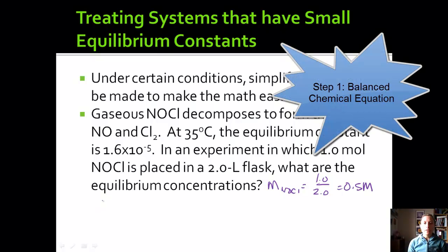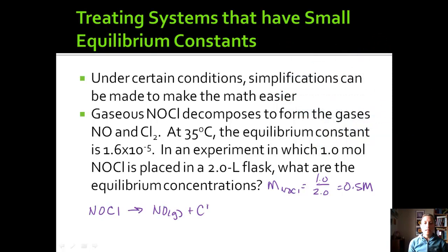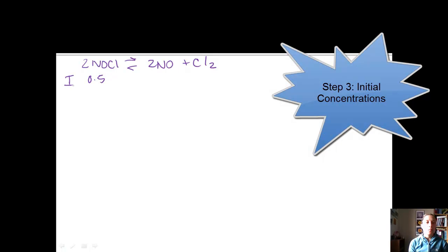We know it's moles per liter. One mole over a 2-liter flask gives us 0.5 molarity. And we can also write the balanced chemical equation. So let's see. We're decomposing NOCl to NO gas and Cl2 gas. And this is also a gas. Next thing we want to do is balance. I think I'm going to put a 2 here and a 2 here, and that should give me a balanced chemical equation.